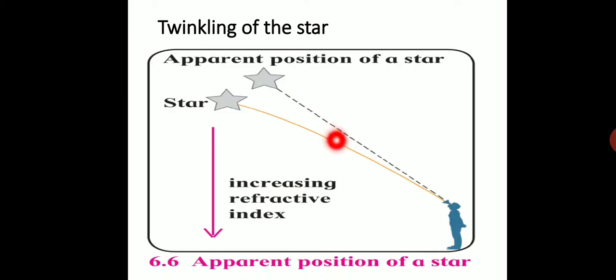Similar to stars, planets are also celestial bodies, but we do not see twinkling of them. Compared to stars, planets are closer to Earth, so planets can be considered as a collection of large number of point sources, and they become extended sources of light.